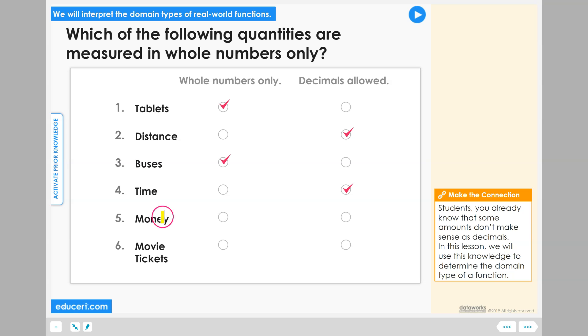Money. You can have one dollar, two dollars, three dollars, but you can also have decimal values in-between, such as three dollars and twenty-five cents. Decimals are allowed for the quantity of money.